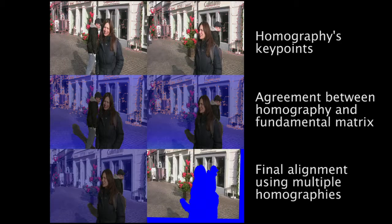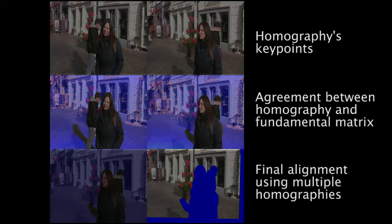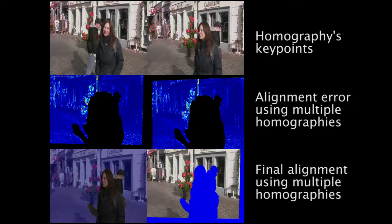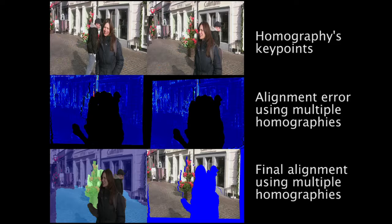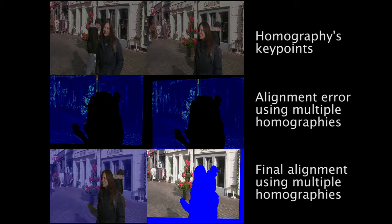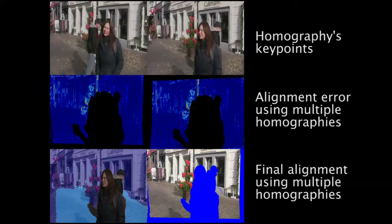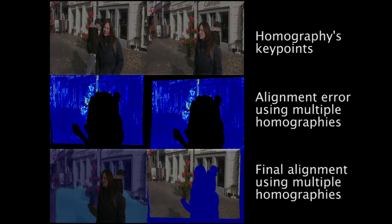In addition, we measure the agreement between each homography and an estimate of the fundamental matrix. Regions where the homography is in good agreement with the fundamental matrix are shown in blue, and where they are not are shown in red. Based on the alignment error and the agreement with the fundamental matrix, we select different homographies for aligning different regions of the scene. In the bottom row, we show the regions selected for each homography and the resulting frame alignment. The alignment error, shown in the middle row, is reduced after adding each homography.